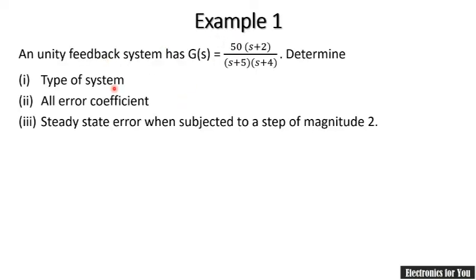Our example is that a unity feedback system has G(s) equals 50 multiplied by (s + 2) over (s + 5) times (s + 4). We need to determine: the type of system, all error coefficients, and the steady-state error when subjected to a step of magnitude 2.